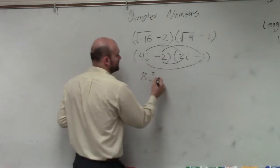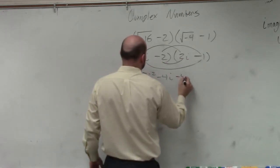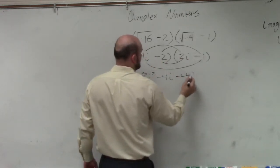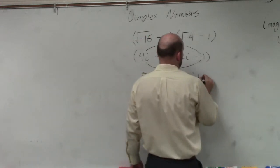2i times negative 2i is negative 4i. Negative 4 times 4i is going to be negative 4i. And then negative 2 times negative 1 is going to be a positive 2.